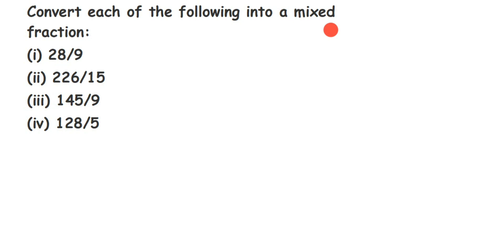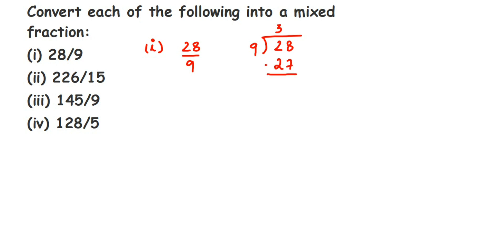Let's take the first question. We have 28 by 9. You have to divide the numbers just like a normal division. So dividing 28 by 9: 9 times 3 is 27. Subtract and you get a remainder of 1, and the quotient is 3. Now I'll show you how to write this as a mixed fraction.